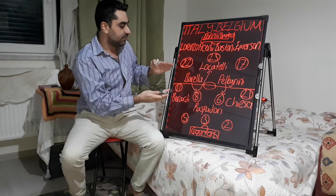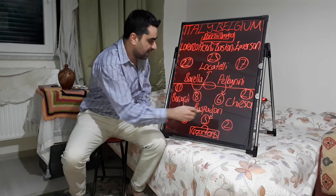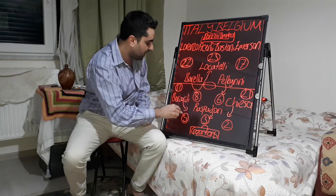On the forward line, Raspadori played one-versus-one against defender Denayer, and at the same time Chiesa and Berardi together tucked infield. Chiesa made press on Alderweireld and Berardi made press on Vertonghen.